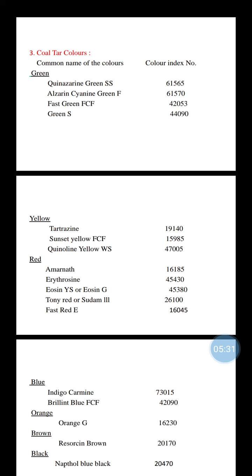Yellow coal tar colors include: Tartrazine (Color Index 19140), Sunset Yellow FCF (Color Index 15985), and Quinoline Yellow WS (Color Index 47005). Red coal tar colors include: Amaranth (Color Index 16185), Erythrosine (Color Index 45430), Eosin YC or Eosin G (Color Index 45380), Toney Red or Sudan (Color Index 26100), and Fast Red E (Color Index 16045).